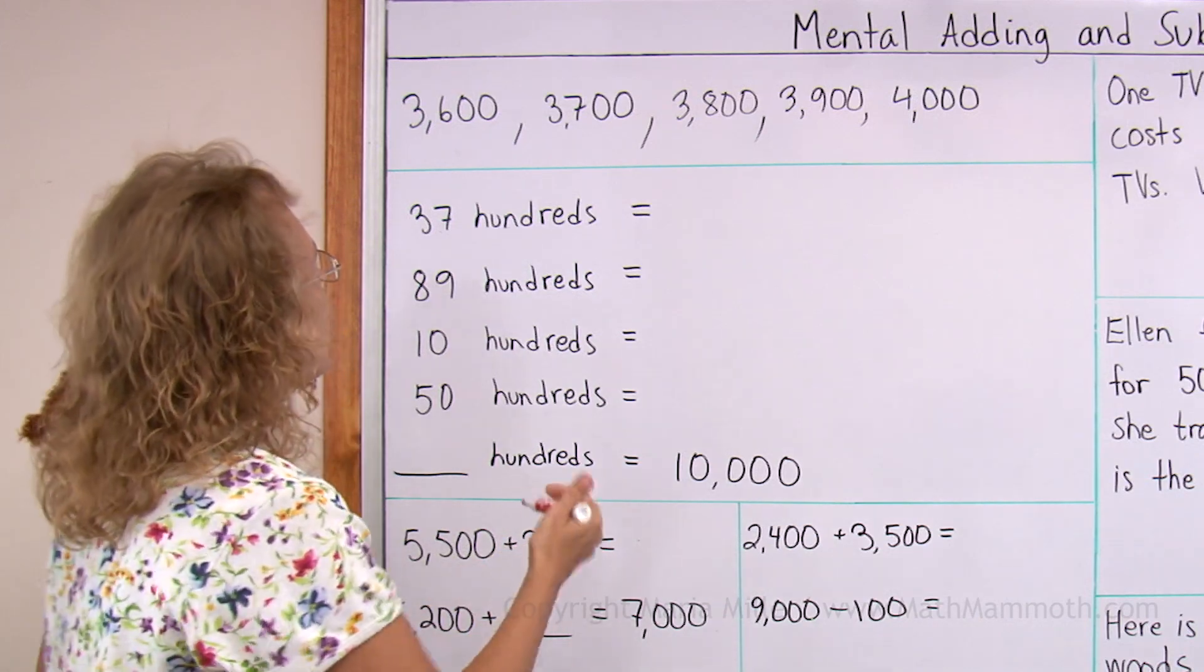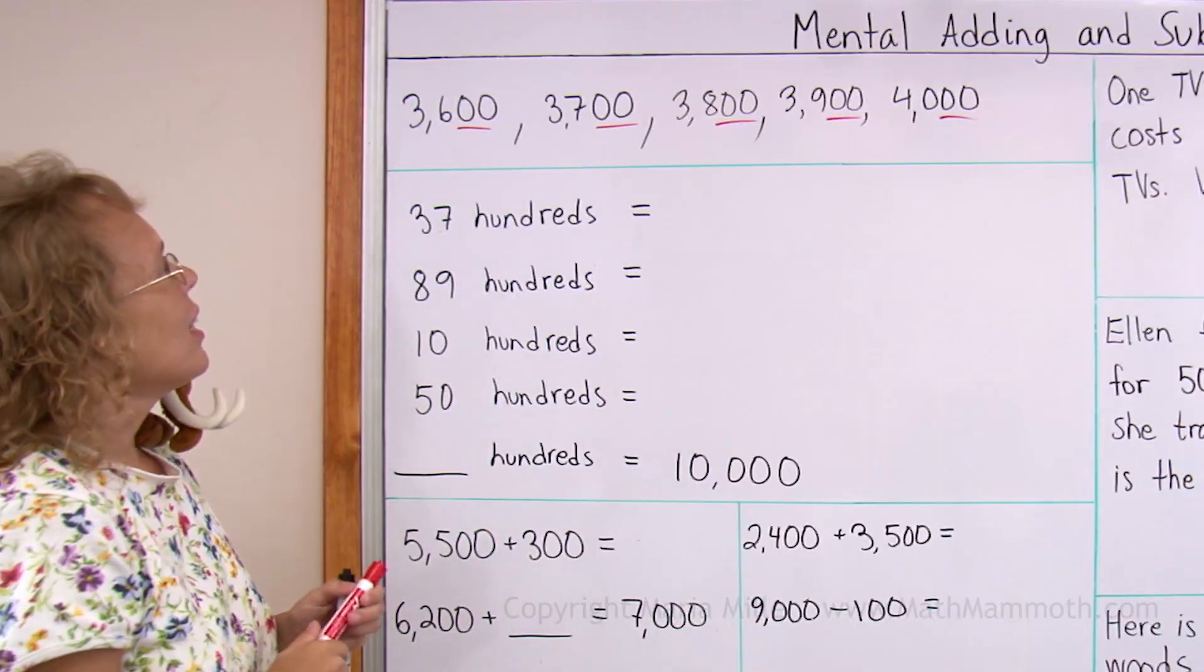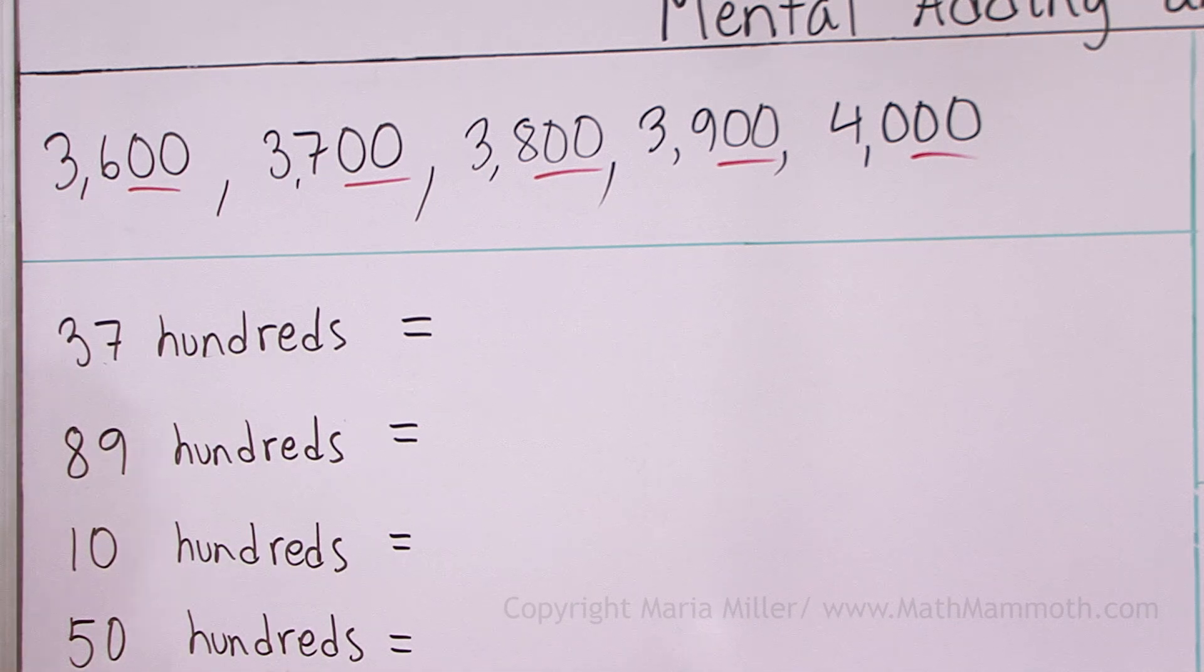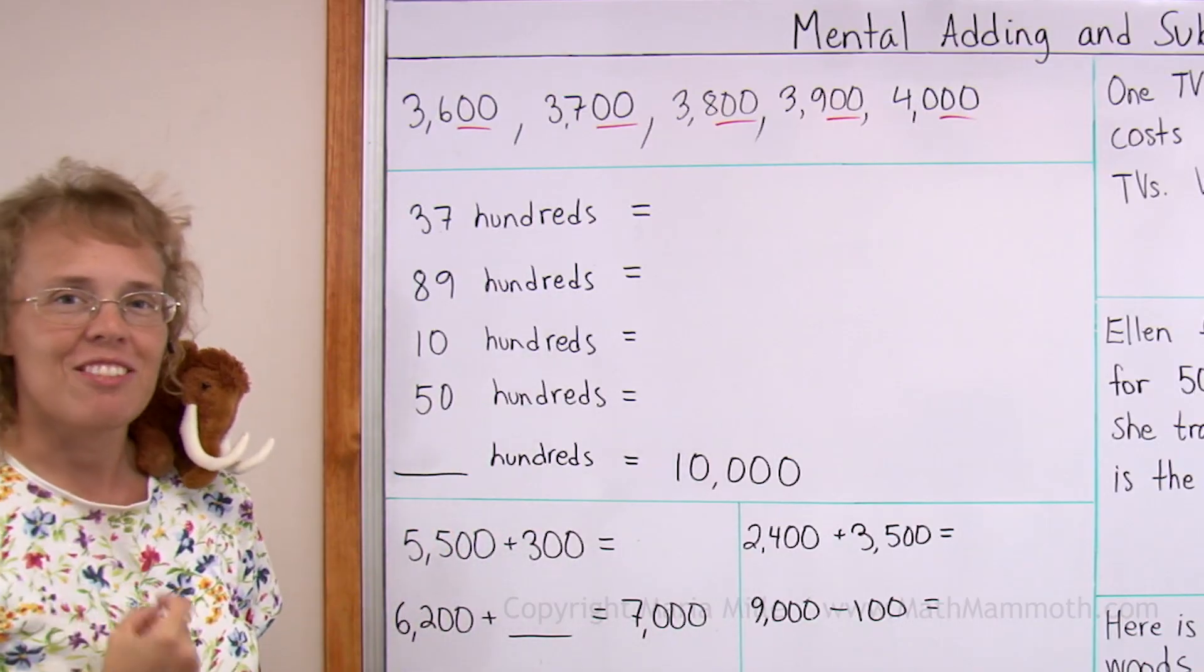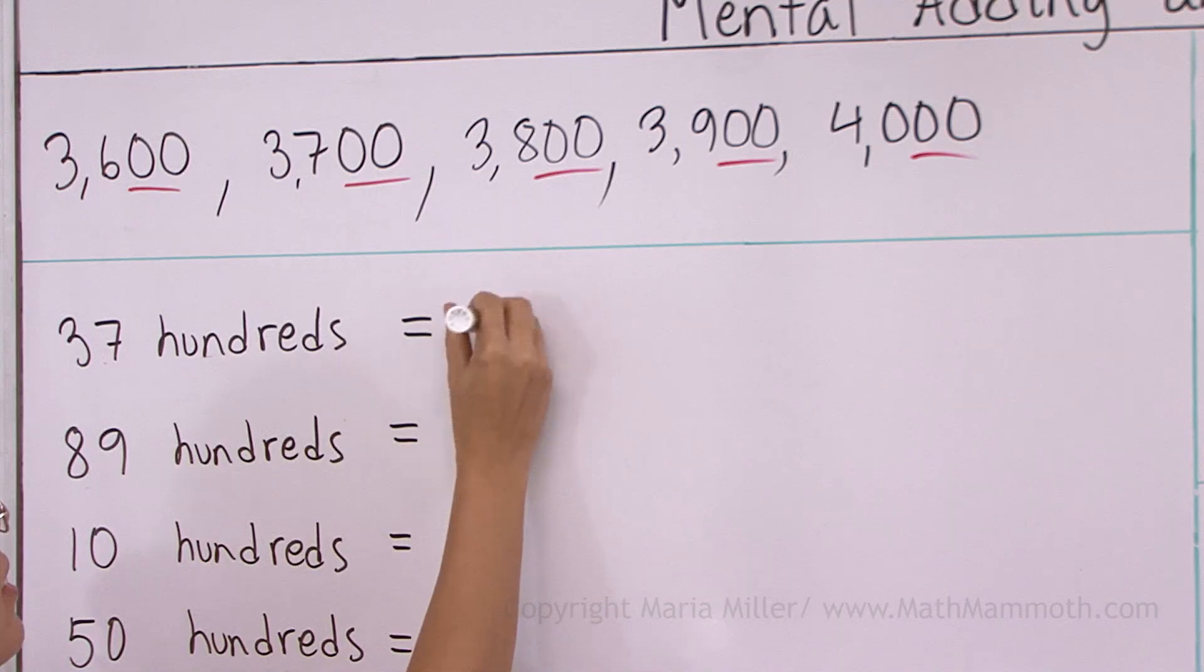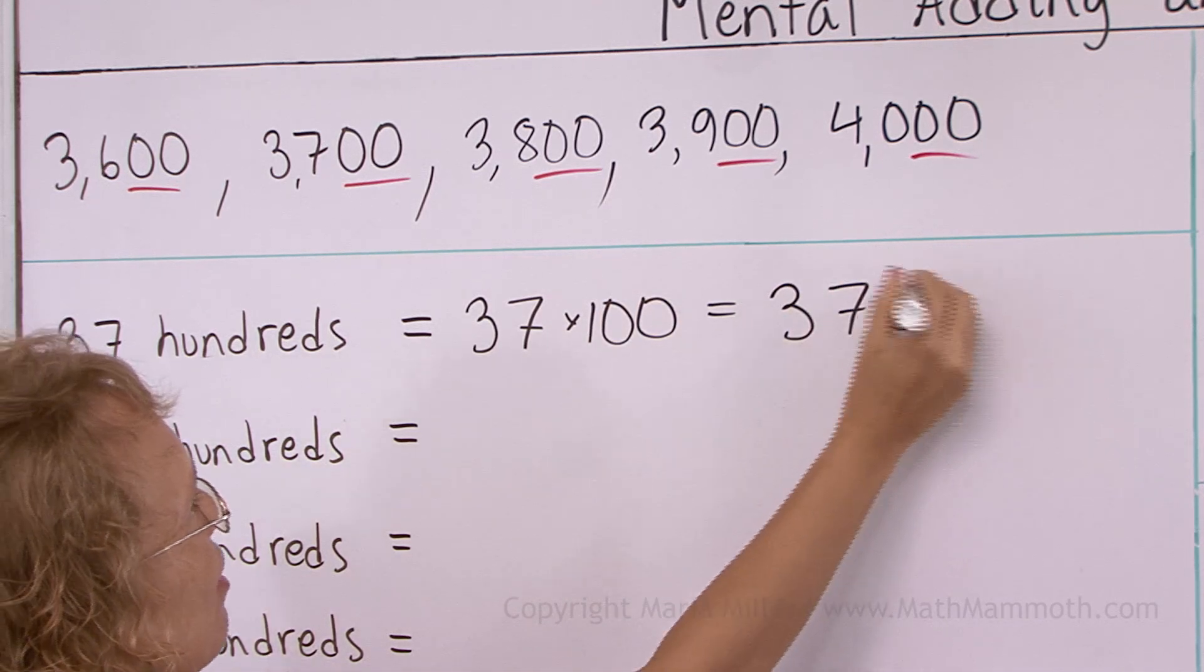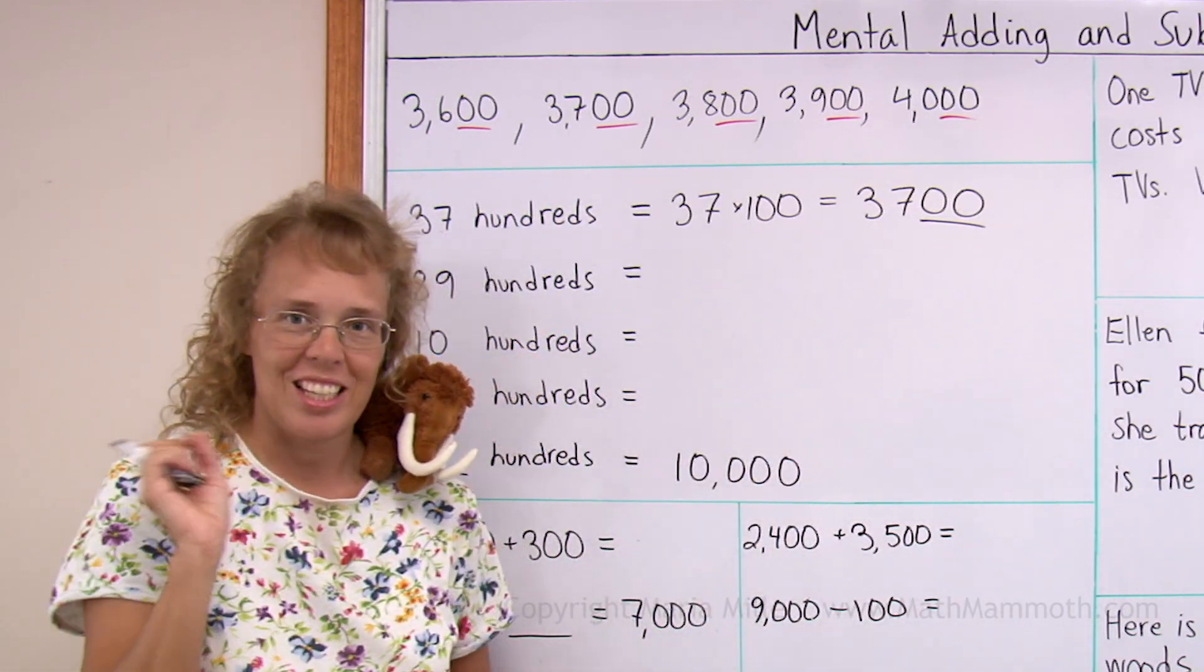Notice though that all of these have two zeros. And we are counting by hundreds. So that is why. This particular one is actually 3600. And this here 3700 is 3700. So 3700 is the same as 37 times 100. All it has is 37 and two zeros at the end of it.